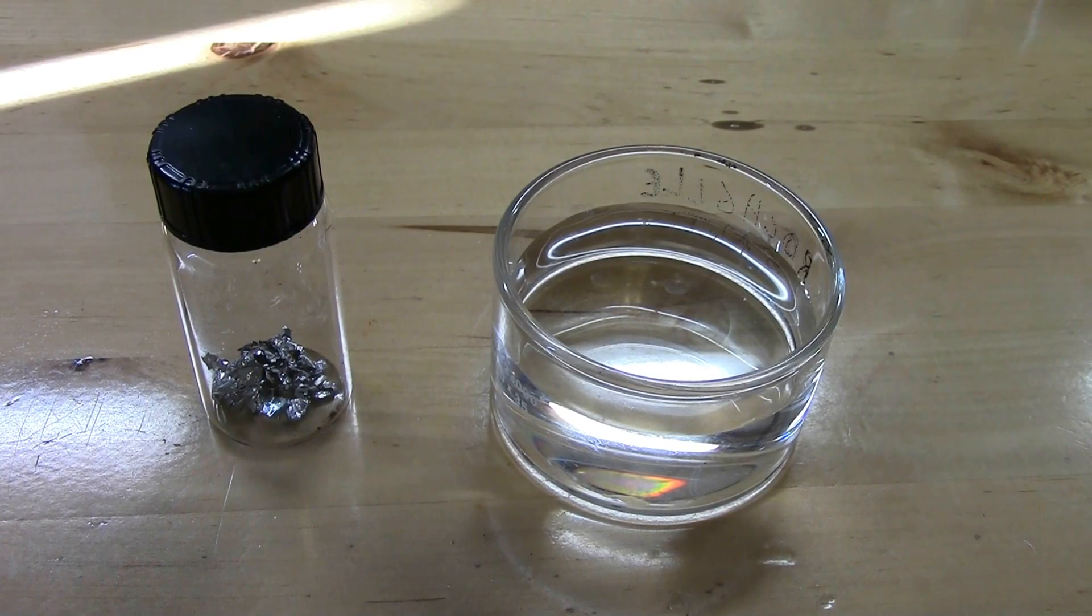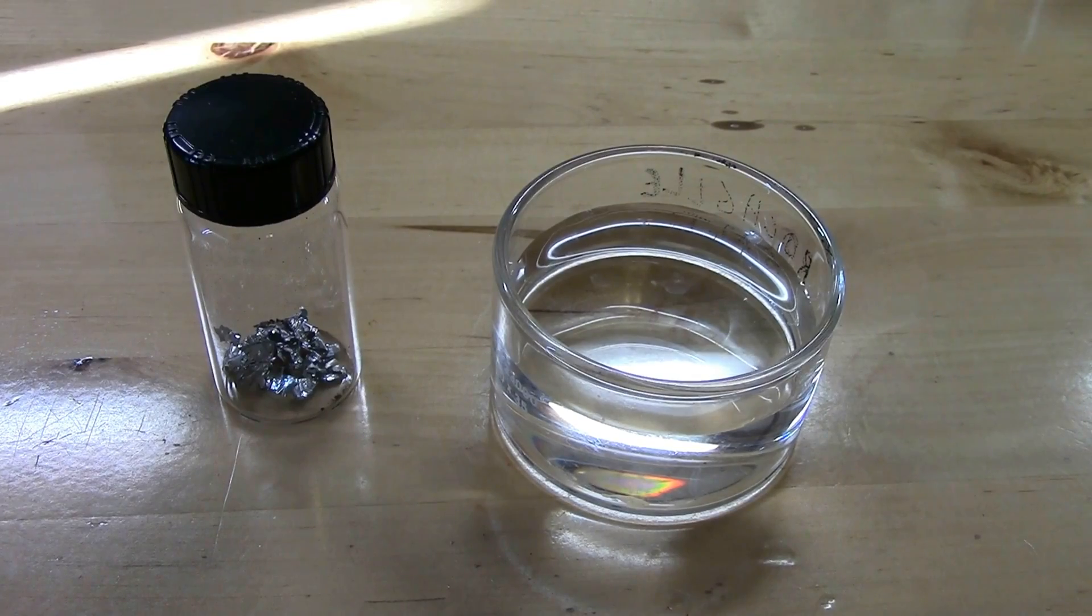Because the way that these batteries work is it's a foil of lithium metal that's separated by a paper separator and then there's an iron sulfide black powder. But the iron sulfide is supported by aluminum. So there's also aluminum foil in there. So I think a lot of the metal that I recovered is actually aluminum. So let's take another look.